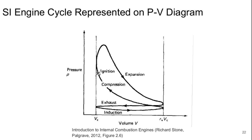Ignition typically happens just before compression ends. Then we start expanding at very high pressure — this is where we're doing useful work as the cylinder volume increases again. Then the exhaust valve opens and as the volume decreases, the pressure drops.